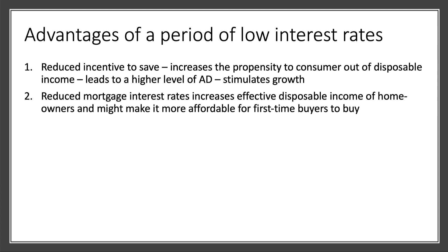Second, if mortgage interest rates come down — which they have — that increases the effective disposable income of homeowners. Effective disposable income is income after direct taxes and after the monthly mortgage payment has been made. So low interest rates and cheaper mortgages give people more money to spend on goods and services each month. And in theory, it might make it more affordable for first-time buyers to get into the market if they can find a cheap mortgage — though as we'll come to, that's not always the case.